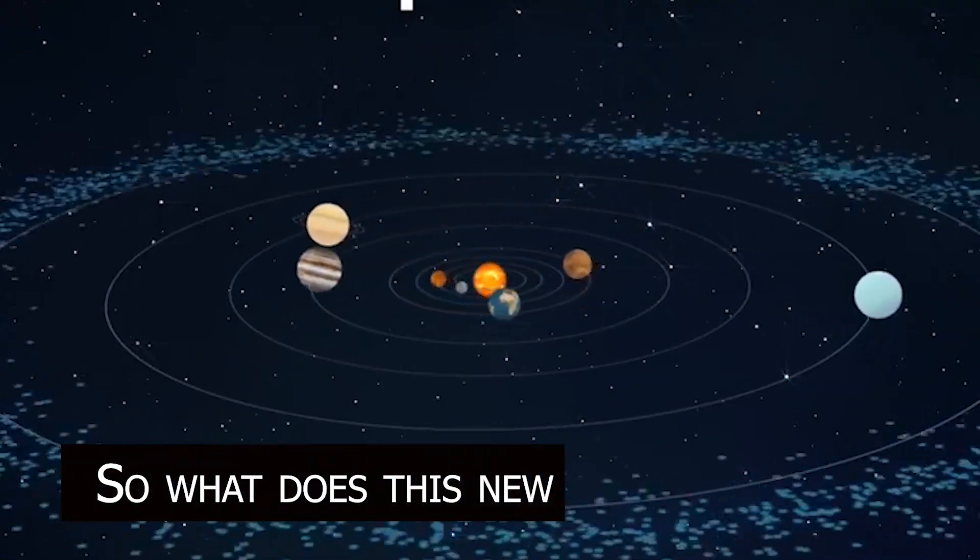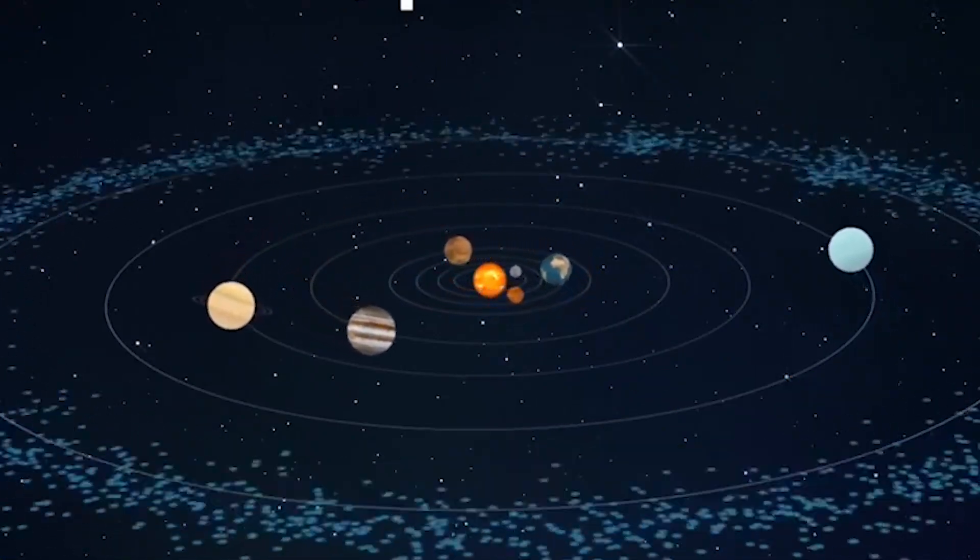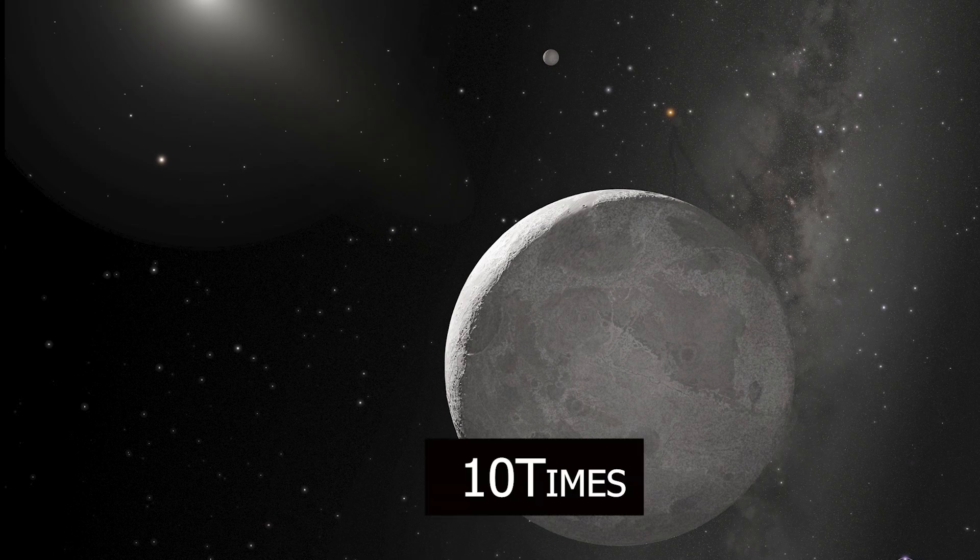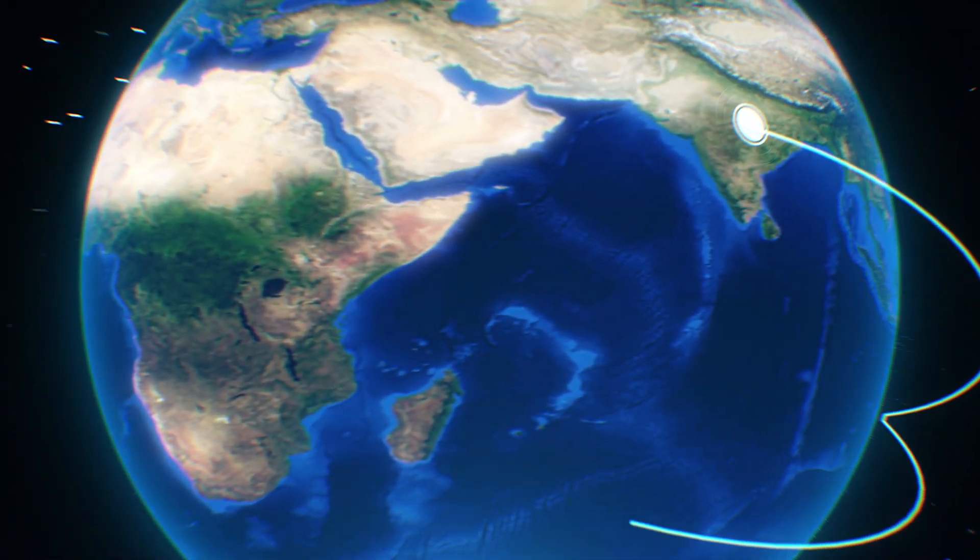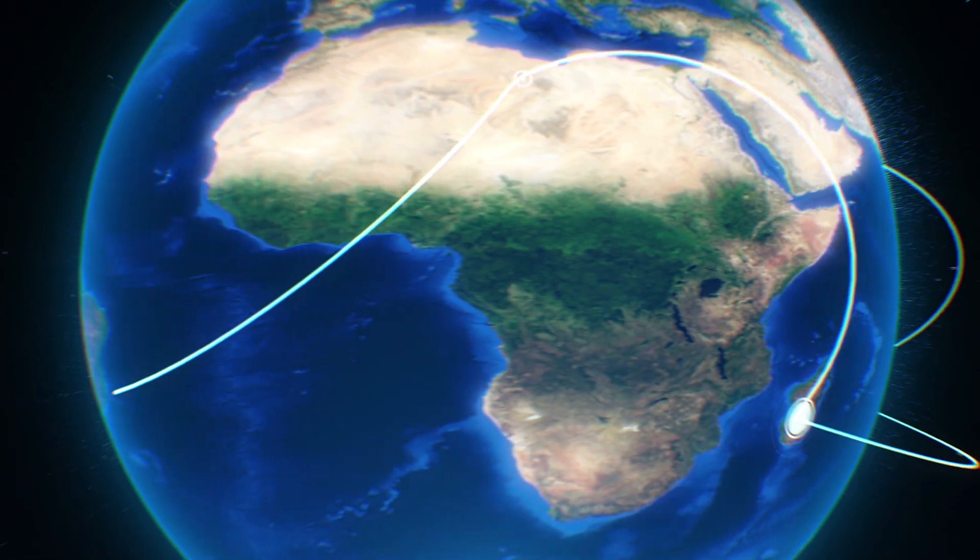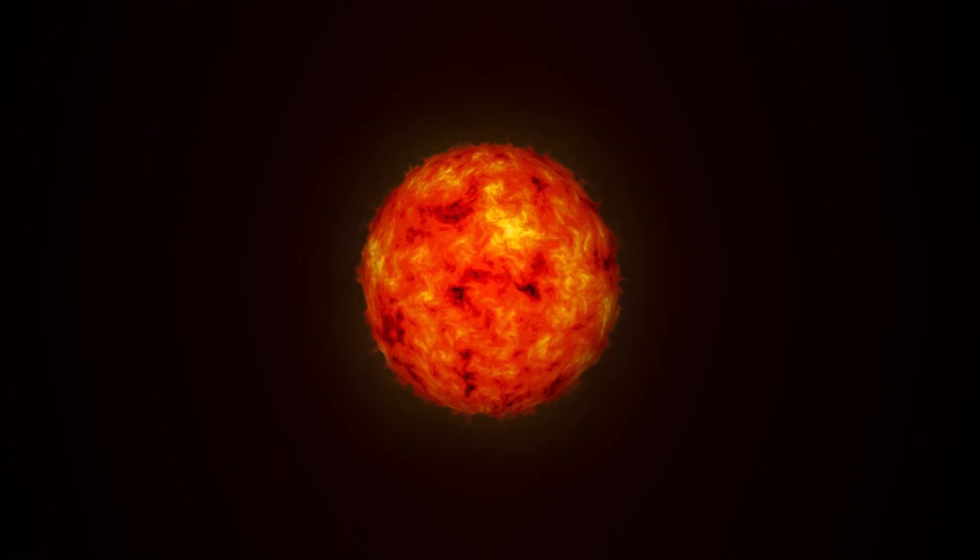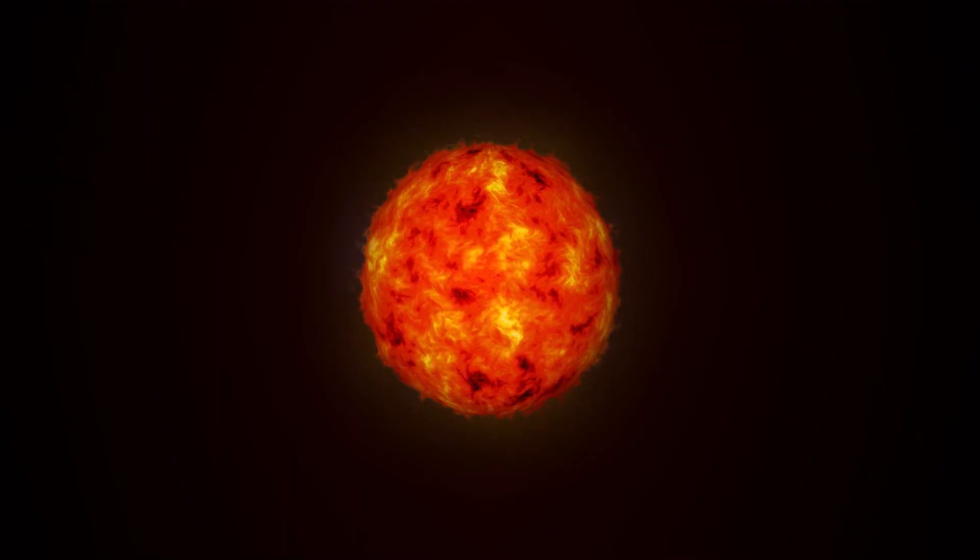So what does this new planet look like? Scientists estimate that planet Xena is about 10 times the size of Earth and has a highly elliptical orbit around our sun. This means that it travels far away from the sun before coming back in close range.